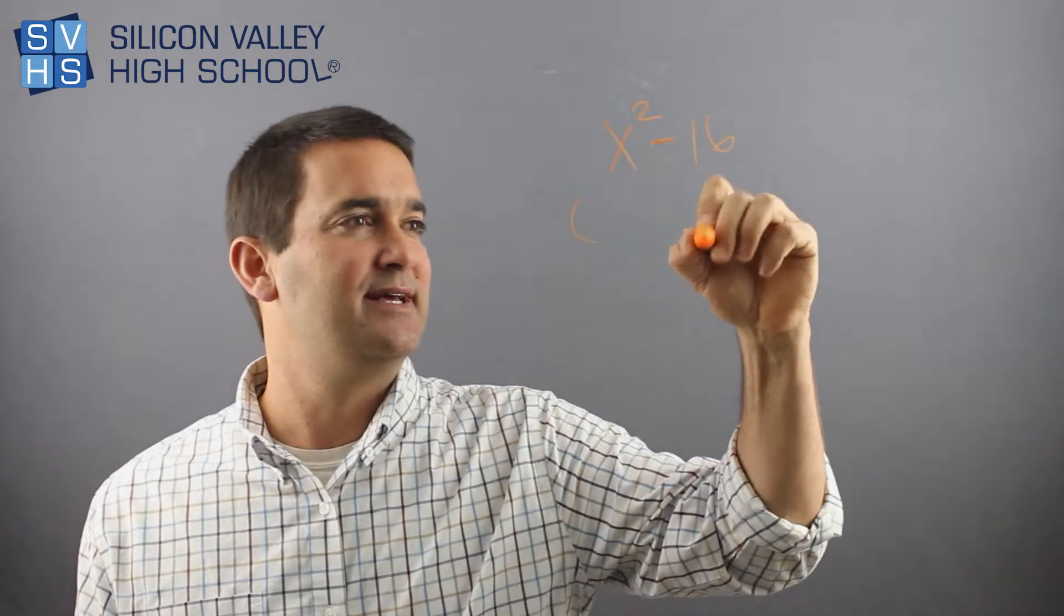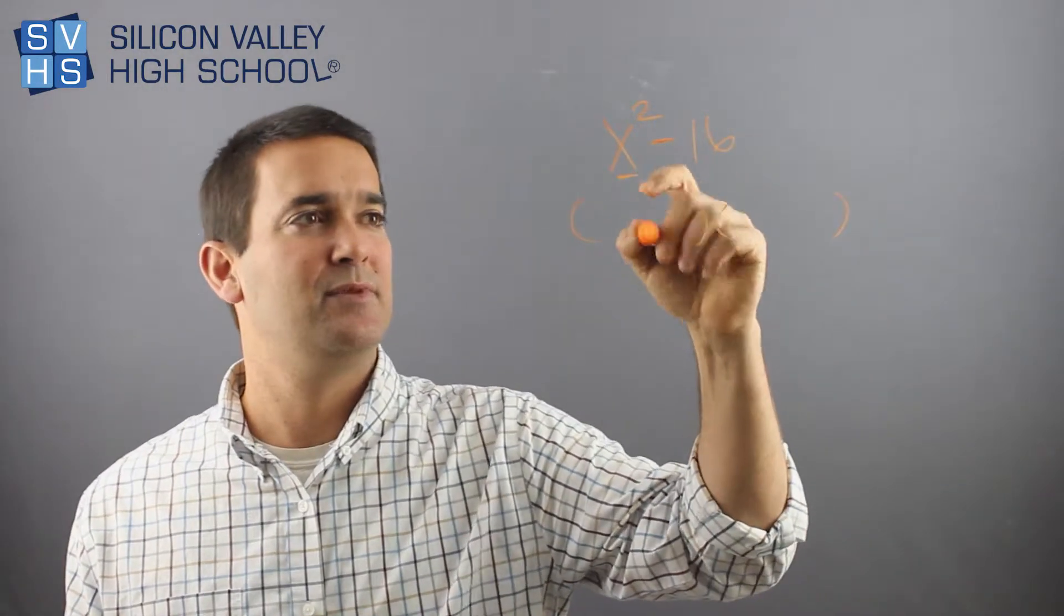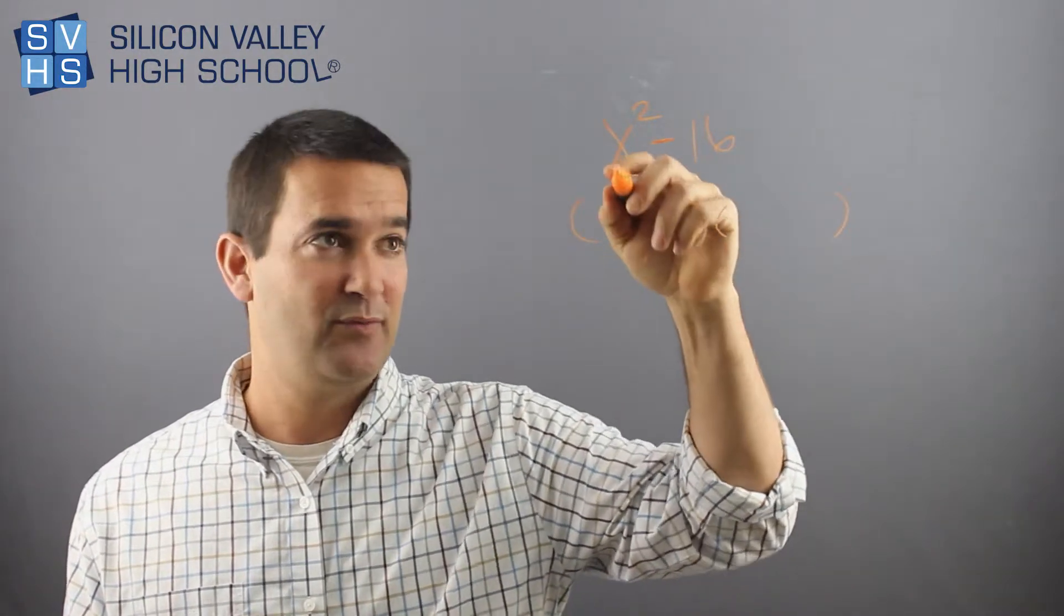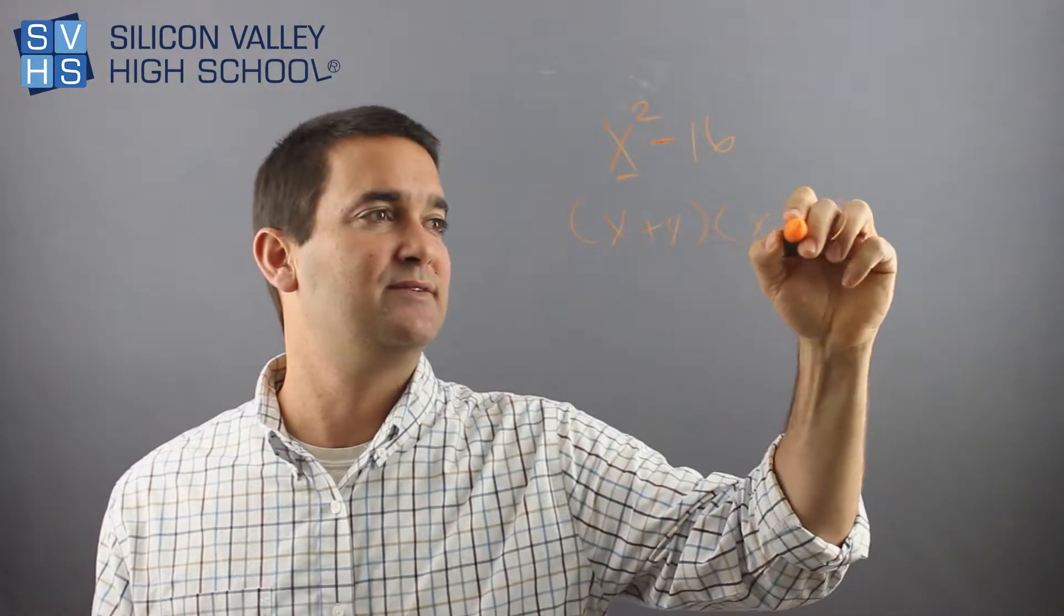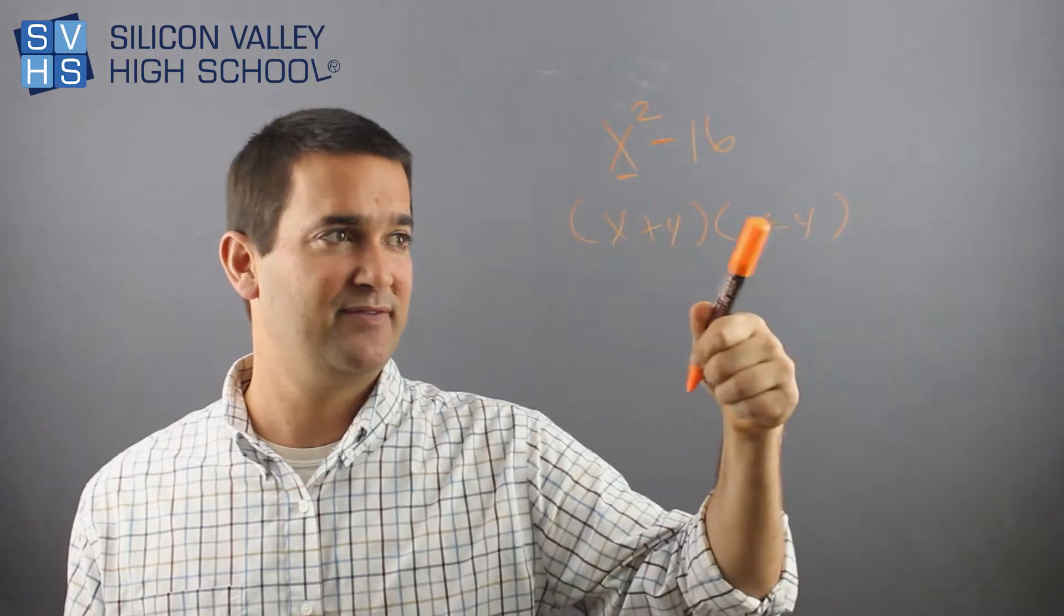So then once you know that, all you do is this. You take the root of him plus the root of him and then the root of him minus the root of him. So for example, this would be x plus four, x minus four.